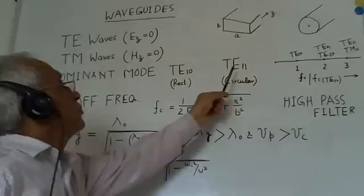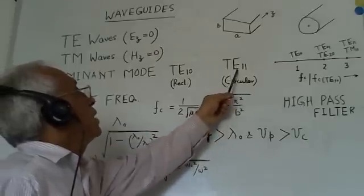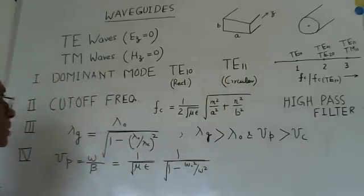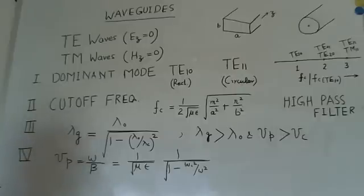For rectangular waveguide and for circular waveguide, this is TE11 mode. And what we notice here is that this is the mode having the lowest cutoff frequency.